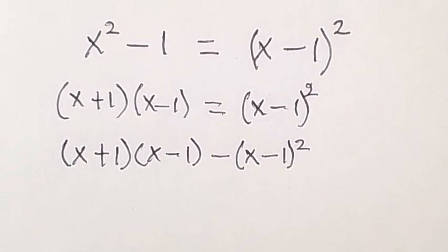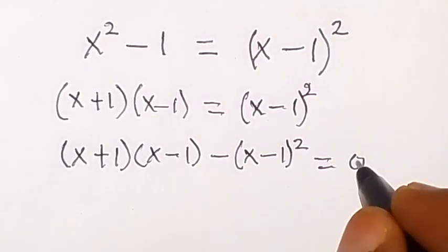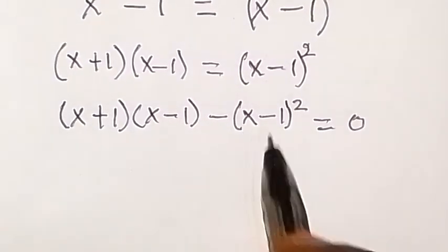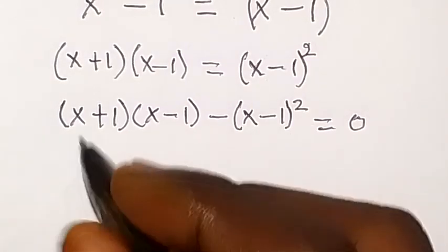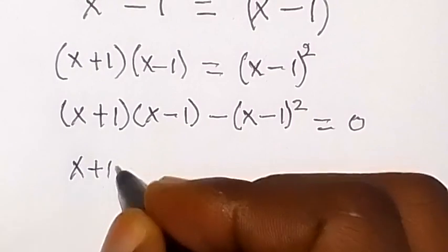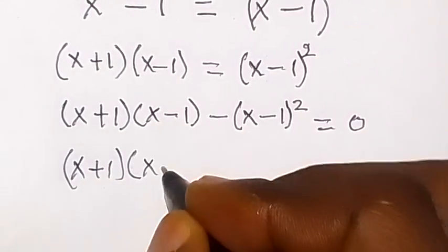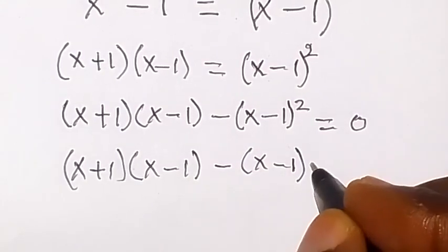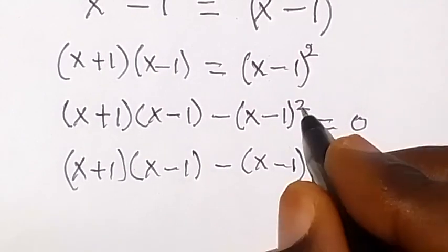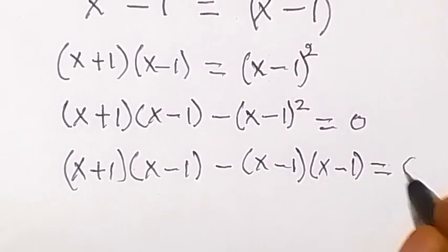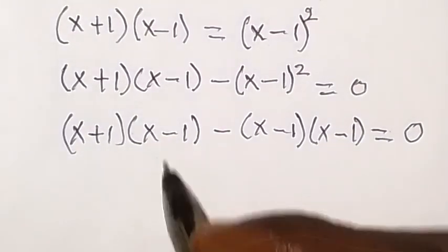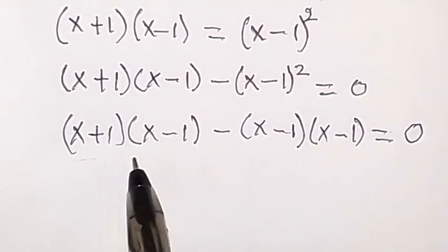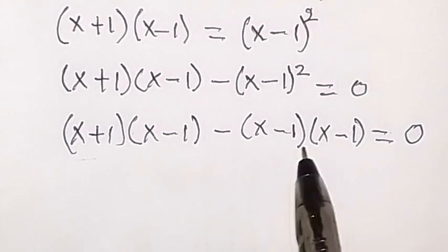We equate this to zero, since we've moved everything to one side. Squaring means it multiplies itself, so we have x plus one times x minus one, minus x minus one times x minus one, equals zero. We can see that both expressions share a common factor — x minus one appears in both terms.